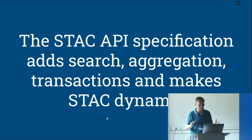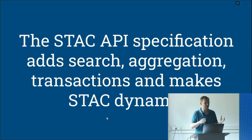The STAC API specification is the second part that builds on top of the STAC specification and adds the dynamic elements — for example, search, aggregation, transactions, and all the things you can't do with just static files in a bucket or on a file system.